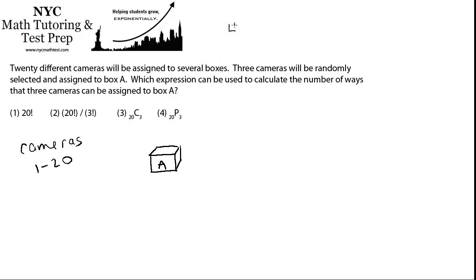For example, four factorial would equal four times three times two times one, which is twenty-four. And your calculator can do this. You can do four factorial, and it'll come up to twenty-four.